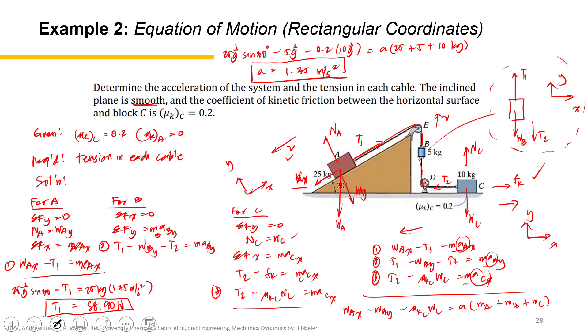So for tension 2, either we can use equation 3 or equation 2. But I will go for equation 3. We're running out of space. So I guess right here. T2 minus mu_K_C, 0.2, W_C is 10g, equals the mass of C, which is 10 kilograms, times the acceleration of the system, which is 1.35 meter per second squared. The tension equals 10 times 1.35 plus 0.2 times 10 times 9.81. And 33.33.